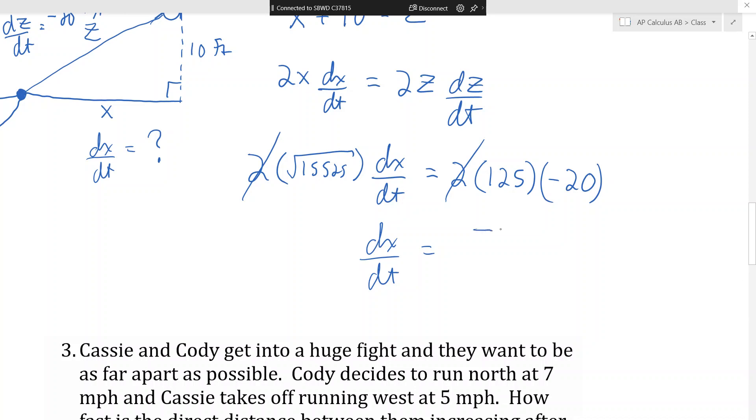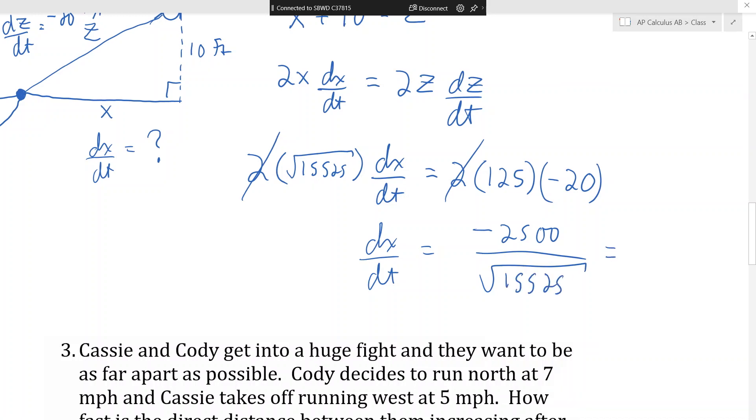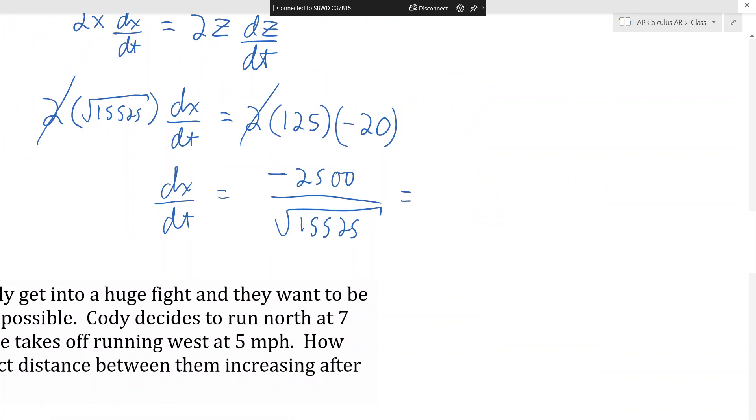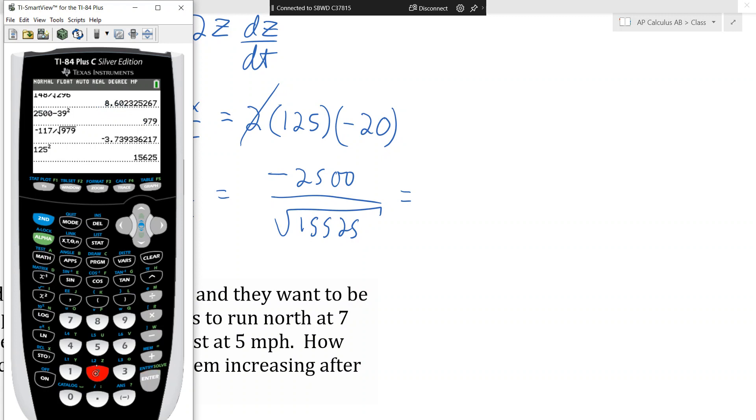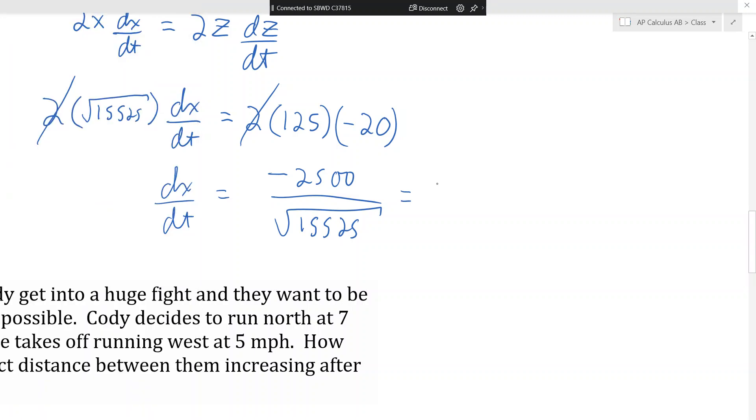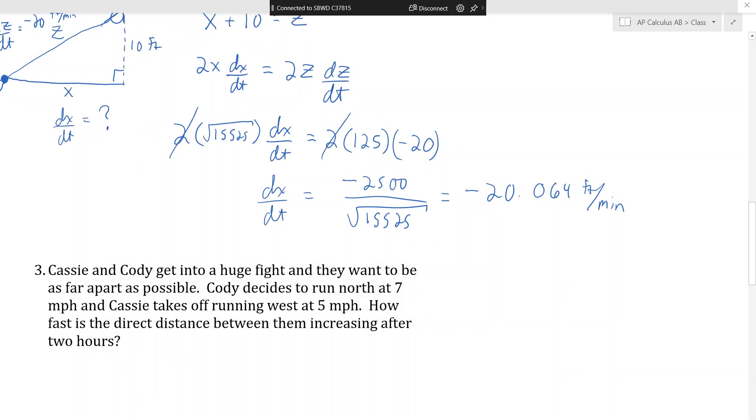And everybody knows 125 squared is 15,625? So that means X is the square root of 15,525. And just solve this out. We can divide both sides by two. Let's get that out of there. 20 times 125. So you can do 10 times 125. That's 1250. And then double it. That's 2500. So it's negative 2500 over this square root. And that does reduce. Well I don't care about that. It's just too much. Too much arithmetic. We're just going to divide this out. That's 2500 divided by the square root of 15,525. And it's 20.064 negative. And that's feet per minute.